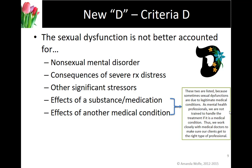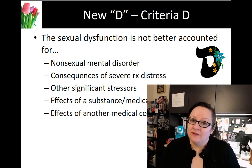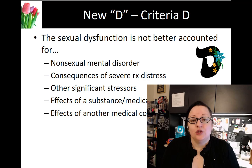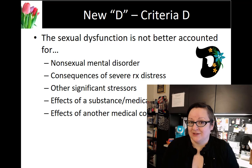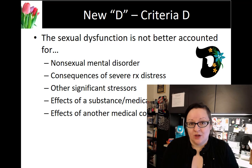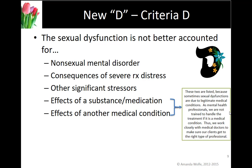To have a DSM diagnosis we have to rule out five things. The first is a non-sexual mental disorder — we don't double-whammy our clients. If a client has major depression and, because of that, has very low sex drive, you wouldn't also give them a sexual desire dysfunction, because their desire issue is only a symptom of their depression. If you resolve the depression, their desire would return. So first ask: is this sexual symptom a symptom of another major disorder?